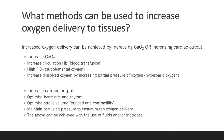What methods can be used to increase oxygen delivery to tissues? Increased oxygen delivery can be achieved by increasing the oxygen content of blood or increasing cardiac output. To increase the oxygen content, we can increase the circulating haemoglobin — one way of doing this would be to administer a blood transfusion. We can increase the fraction of inspired oxygen by giving supplemental oxygen, and in some cases we would increase dissolved oxygen by increasing the partial pressure of oxygen, as we see in hyperbaric oxygen therapy.